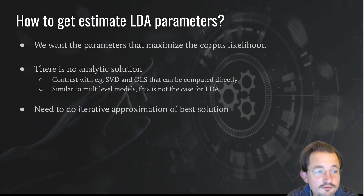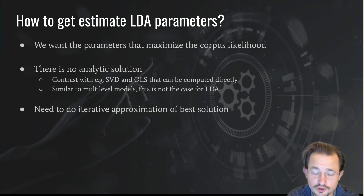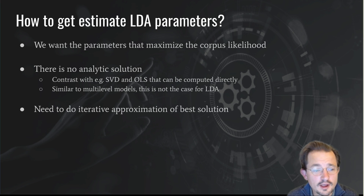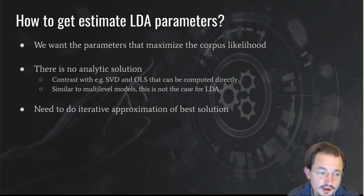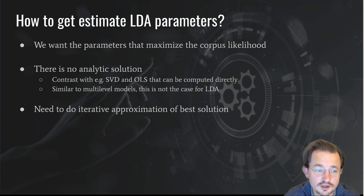How do we find the parameters that maximize the corpus likelihood? Unfortunately, in the case of LDA, there is no analytic solution. If we run a normal ordinary least squares regression, you can just run a formula and it gives you the parameters. The same holds for singular value decomposition and many other algorithms. In the case of LDA, however, like in multilevel models, there is no one way to immediately calculate the solution. The best you can do is approximate the best solution in an iterative fashion, running a number of steps where every step hopefully brings you a little bit closer to the best solution.